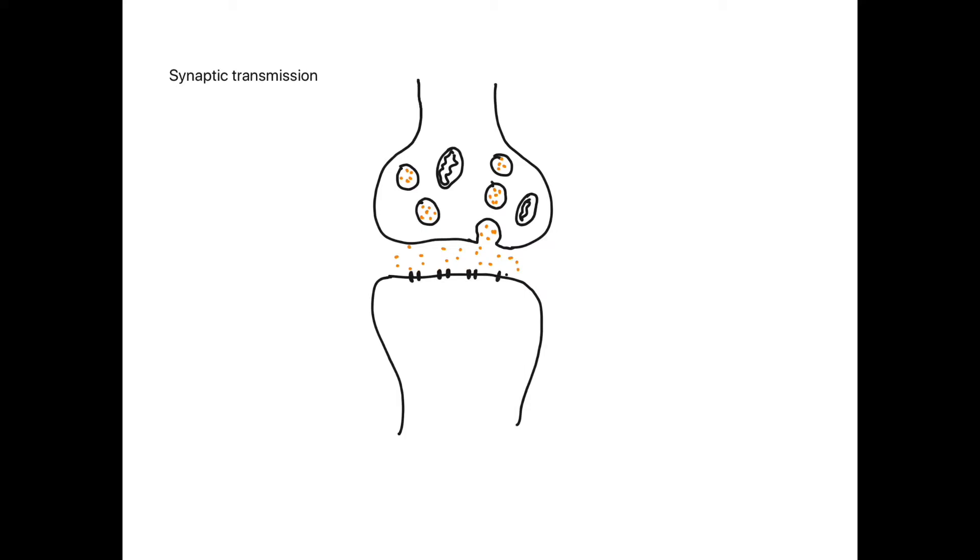So here we can see the axon terminal. The axon terminal has a swollen part that is called a synaptic bulb which contains synaptic vesicles. So here this is the axon terminal of the presynaptic neuron.